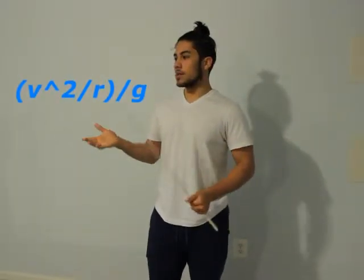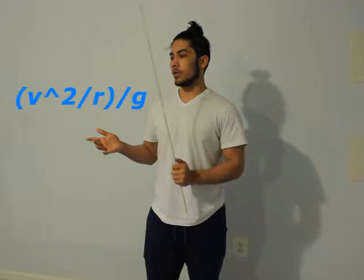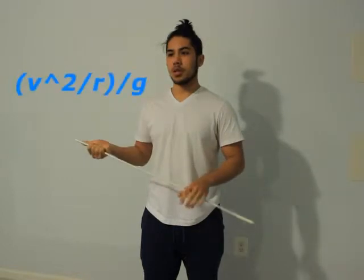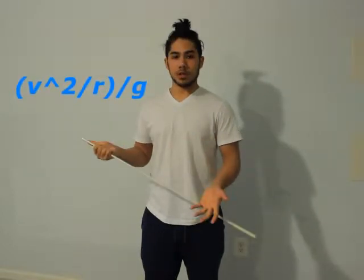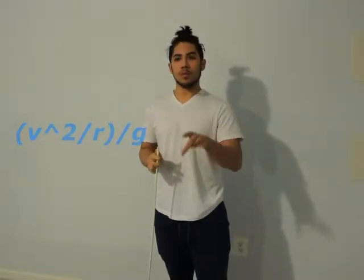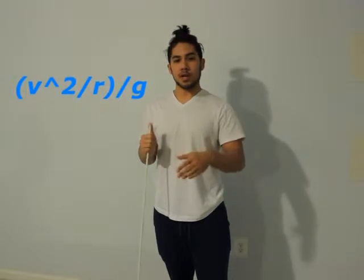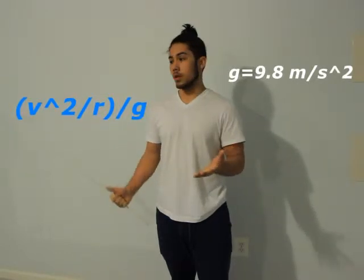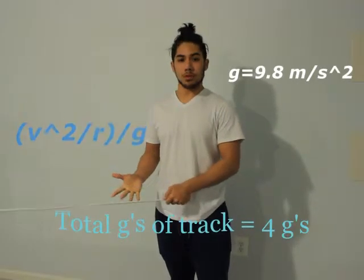Our thesis is we have to figure out if there's g-forces acting upon this model coaster. G-force is basically just a measurement of acceleration that indirectly causes weight. In order to find a g-force, you have to take your velocity, divide it by your radius, then divide it by gravity, which is 9.40. And that's how you get your g-force, which ends up being 4 g's acting upon the coaster.